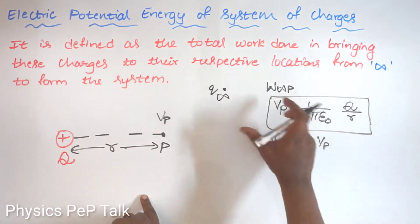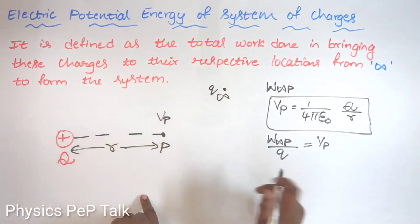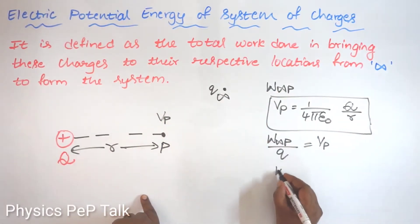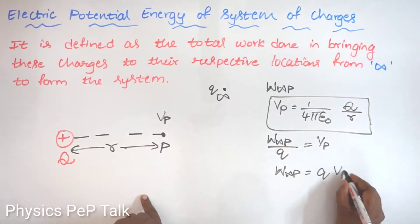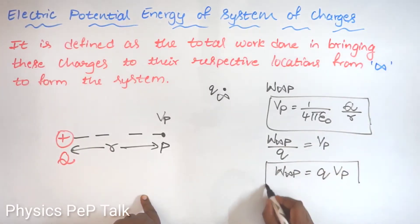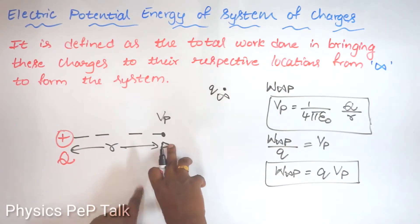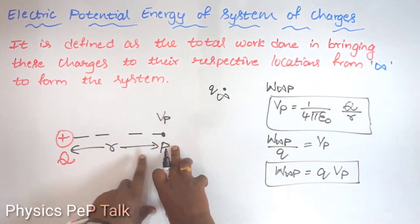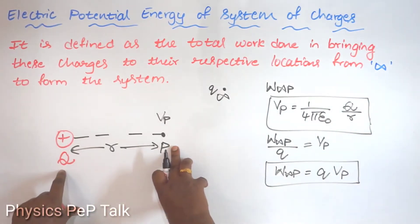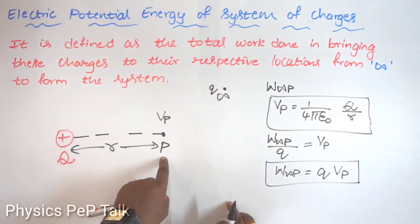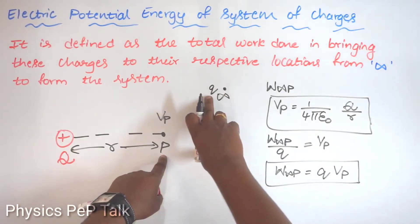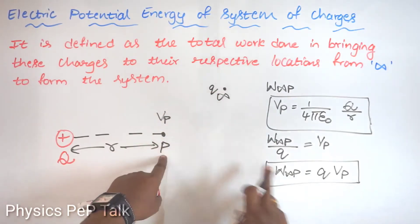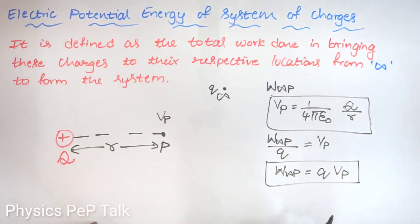Work done in bringing a charge from infinite distance to point P is W(∞→P), which is nothing but charge q into electric potential at point P. So the electric potential at point P, because of the presence of charge capital Q, gives us the amount of work done in bringing charge small q from infinite distance to point P. This is given by the equation for electric potential energy.